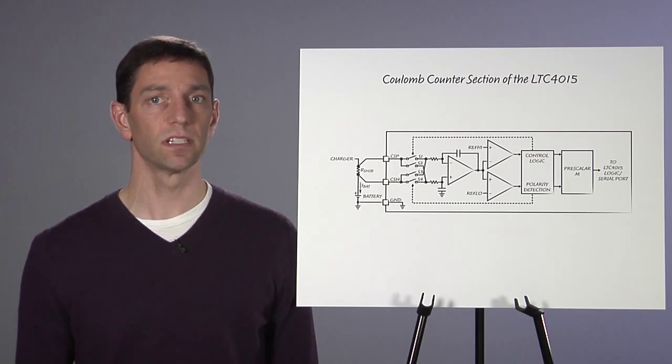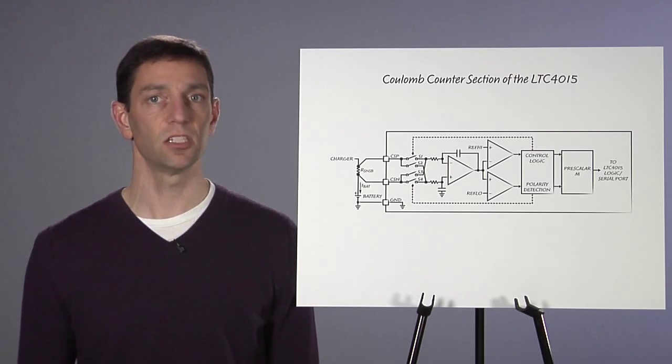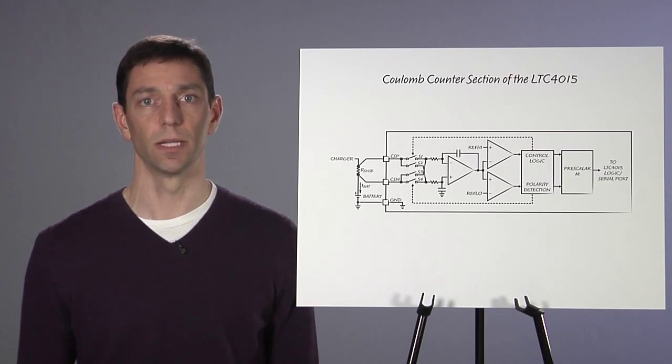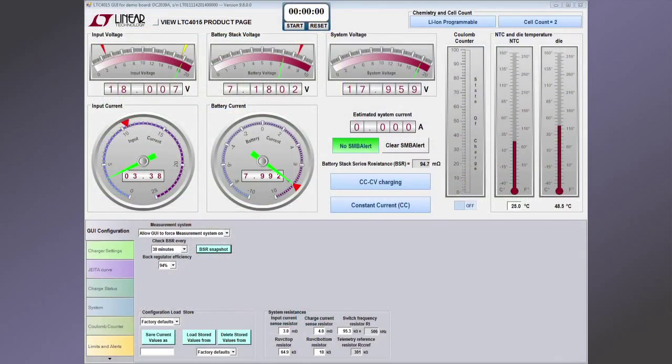Now let's look at some real-world examples using our LTC4015 demo board, DC2039A and its GUI. The default demo board configuration here is set to charge a stack of two lithium-ion batteries as shown in the upper right corner of the GUI. The input, battery, and system voltages can be read across the top of the screen while the dial gauges show the input and battery currents.